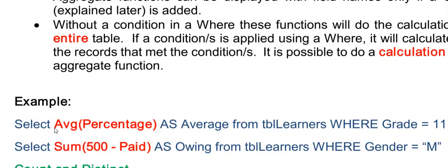So what this statement is doing is it's calculating the average of the percentages stored in the field called percentage. And it's calculating the average of only the grade 11 learners because I've added a WHERE here where the grade is equal to 11.